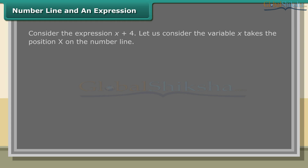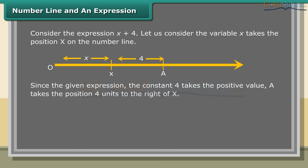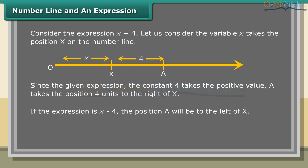Consider the expression x plus 4. Let the variable x take a position on the number line. Since the constant 4 takes a positive value, point A takes a position 4 units to the right of x. If the expression is x minus 4, the position A will be to the left of x.